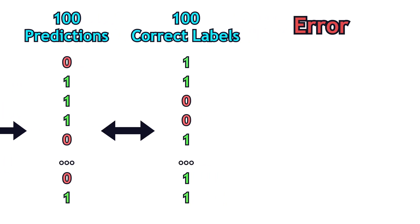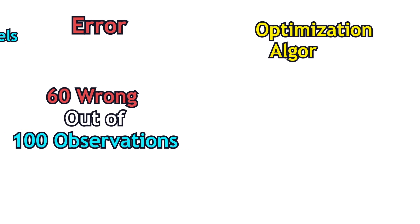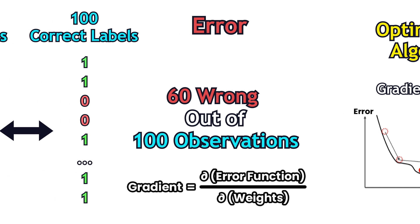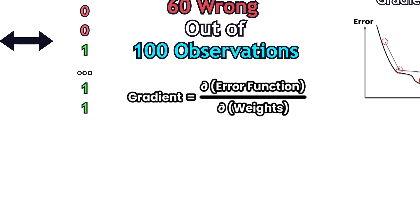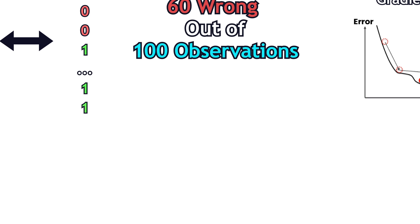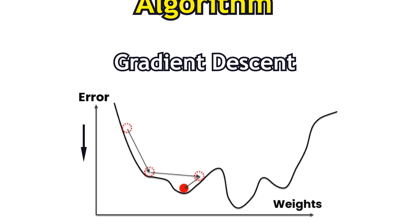Say, with random weights, you predicted 60 wrong from 100. Then, an optimization algorithm, say gradient descent, calculates the gradient of the error function with respect to the weights. The weights are updated in the opposite direction of the gradient. In simple words, the algorithm updates the weights in the direction that will decrease the error.